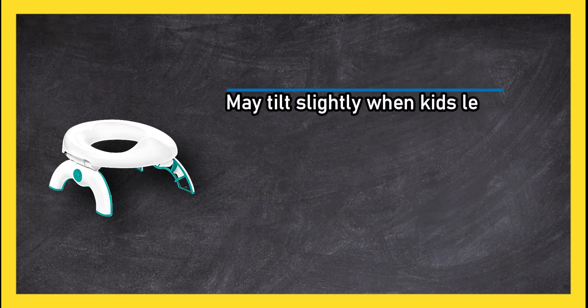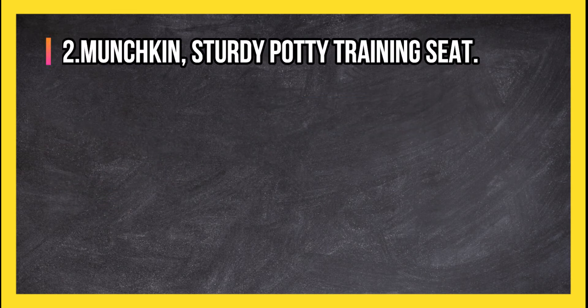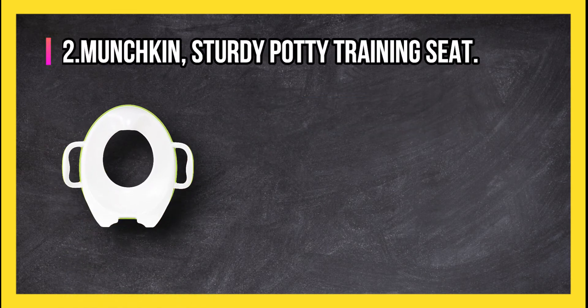May tilt slightly when kids lean forward while it's attached to a toilet. At number two: Munchkin Sturdy Potty Training Seat.